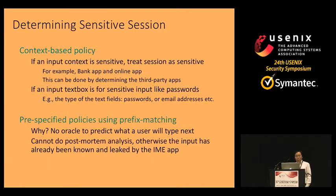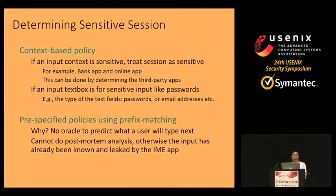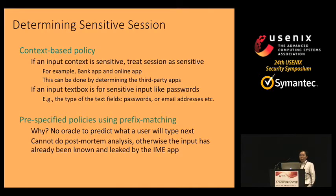If an input text box is for entering sensitive data like a password, Android provides means to identify the type of text box — such as whether it is a password or email address — and IBOX will treat that session as sensitive. For other types of input, IBOX uses pre-specified policies with prefix matching. Since there is no oracle to predict what a user will type next and we cannot do post-mortem analysis — otherwise the input may have already been seen by the IME app.